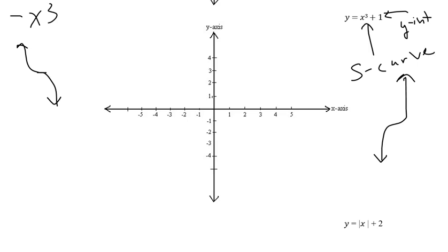First I'm going to plot the positive 1 which is right here on the y-axis. That's the y-intercept. And then it goes up to the right and it goes down to the left. Again if you wanted to be more precise you could use the xy chart.